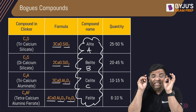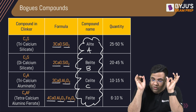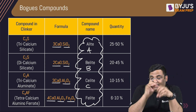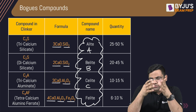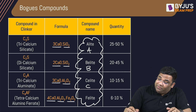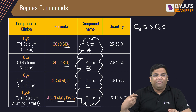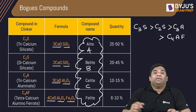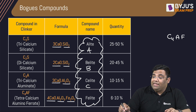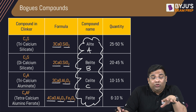Now coming to the percentages — you have to remember a range. C3S (Alite) has the highest contribution: 25 to 50 percent. C2S is the second contributor at 20 to 45 percent — slightly less than C3S. Then C3A is 10 to 15 percent. The least contributor is C4AF at 6 to 10 percent. This is the decreasing order of their contribution.